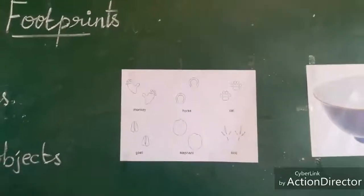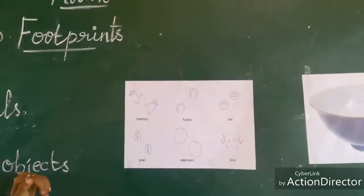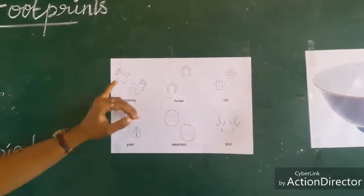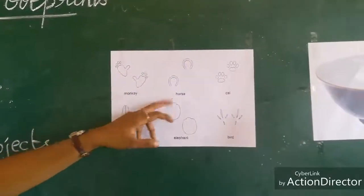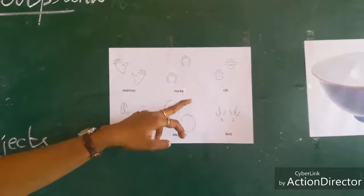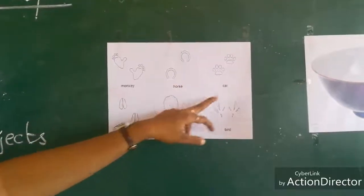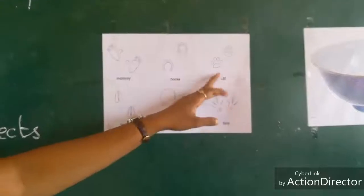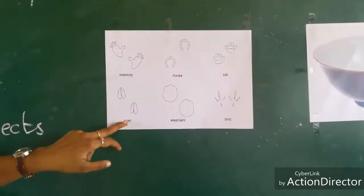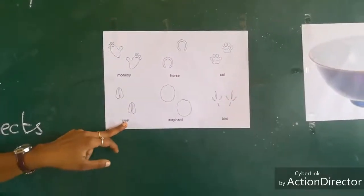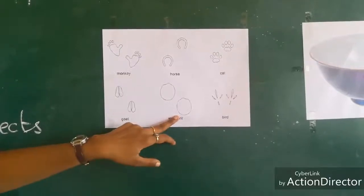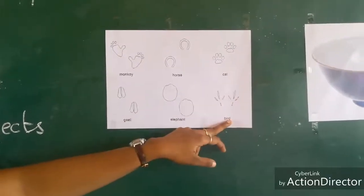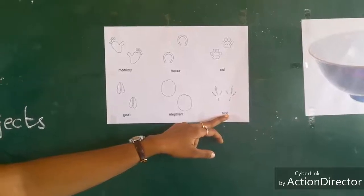Now I am going to show some footprints of animals. The first one is the monkey footprint. The second one is the horse footprint. The third one is the cat footprint — it is similar to a dog footprint. Next is the goat footprint. This one is the elephant footprint. And last, this one is the bird footprint.